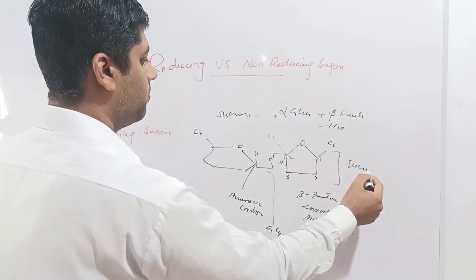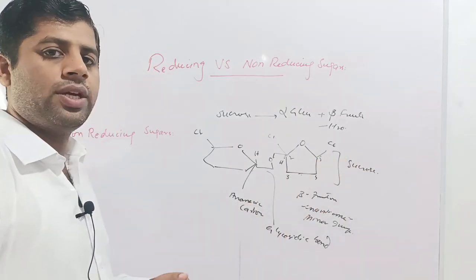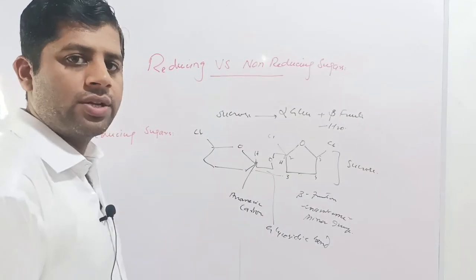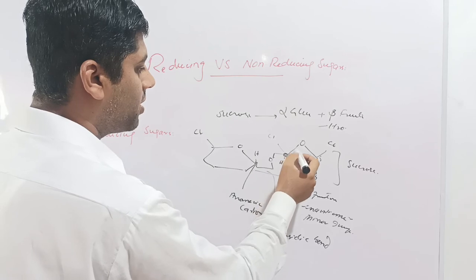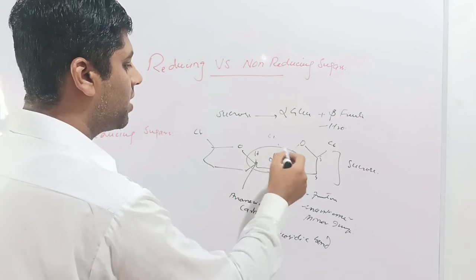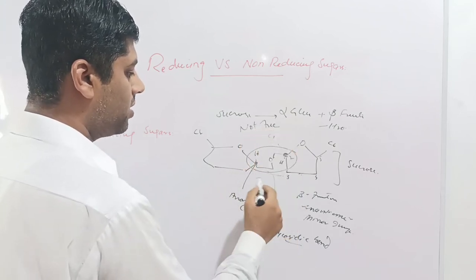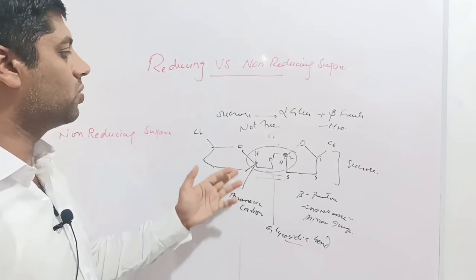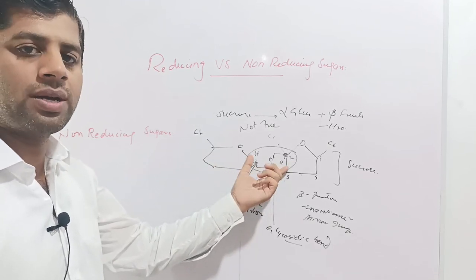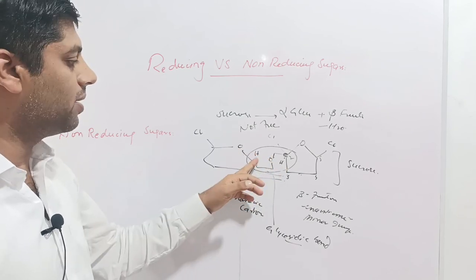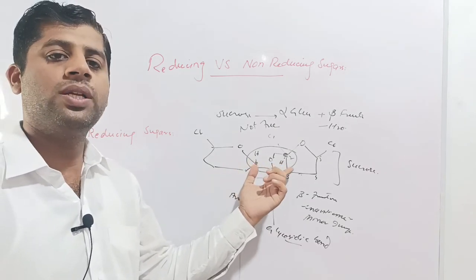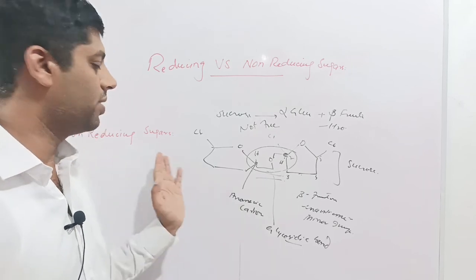Looking at the anomeric carbons in sucrose: the first anomeric carbon derived from the carbonyl group in glucose is bound in the glycosidic linkage and is not free. The anomeric carbon of the second molecule — fructose — is also bound in the glycosidic linkage and is not free. Both anomeric carbons are bound in the glycosidic linkage, so sucrose cannot be oxidized and cannot serve as a reducing sugar. The same applies to polysaccharides, where anomeric carbons of all adjacent molecules are bound in glycosidic linkages. Therefore sucrose and polysaccharides are non-reducing sugars.